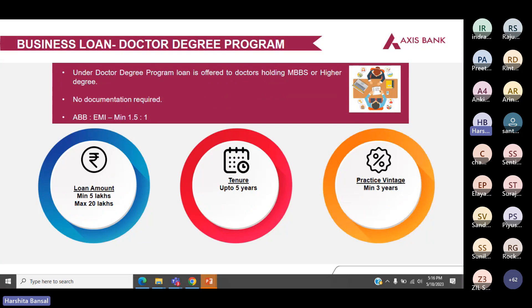Next is the doctor degree program. Here the loan is offered on the basis of the degree of the doctor — the doctor needs to have an MBBS or higher degree; no other documentation is required. The ABB to EMI ratio is 1.5:1. Minimum loan amount is 5 lakhs and maximum is 20 lakhs, with tenure up to five years. The practice vintage of the doctor should be minimum three years.